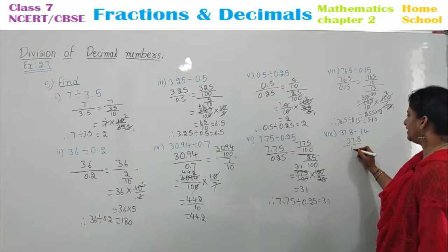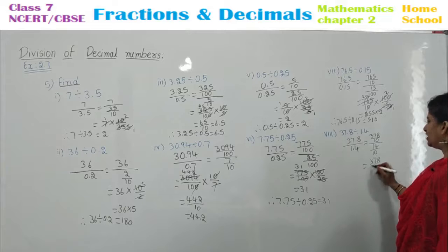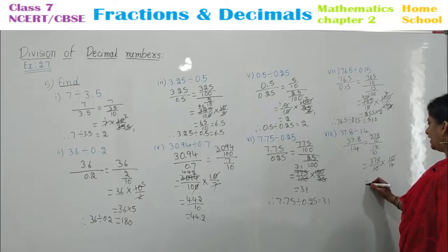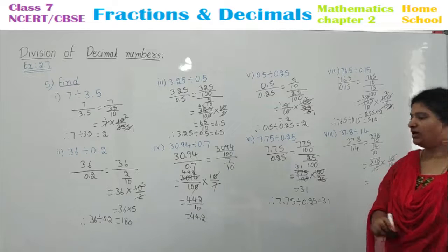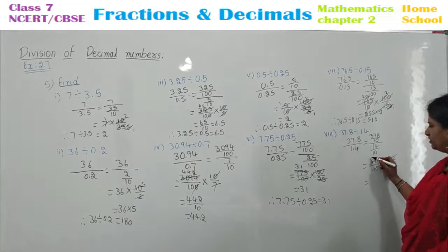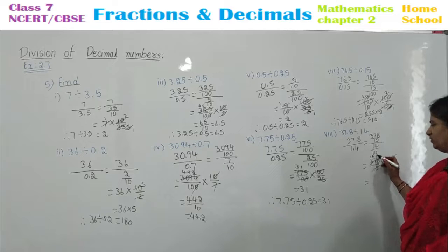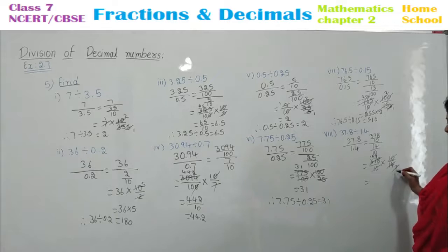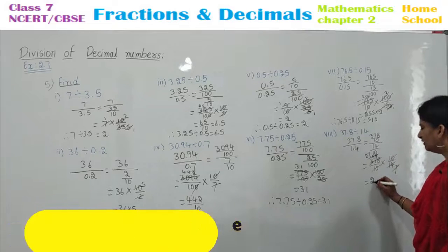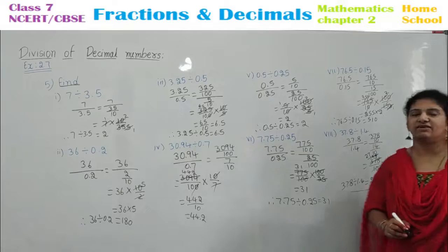See the eighth one: 37.8 divided by 1.4. Remove the decimal: 378 by 10 whole divided by 14 by 10. Do the reciprocal: into 10 by 14 — the 10s cancel. Now 14 table — you can cancel with small numbers: 2 sevens are 14. Using the 2 table: 2 ones are 2, 1 is left — meaning 17; 2 eights are 16, 1 is left — again 18; 2 nines are 18. With the 7 table: 7 ones are 7, 7 twos are 14 — 49 is left; 7 sevens are 49. Therefore, 37.8 divided by 1.4 is equal to 27.